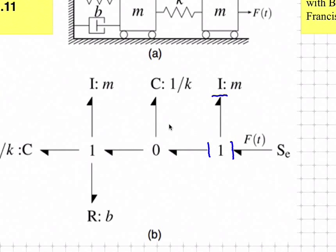We go to the next energy storing element — the C element — and place it in integral causality. That will specify the effort into the zero junction, and the causality will propagate all the way out to the remaining one junction. The next element is an I element; placing it in integral causality will specify the remaining causal strokes because it gives us the flow at this one junction.